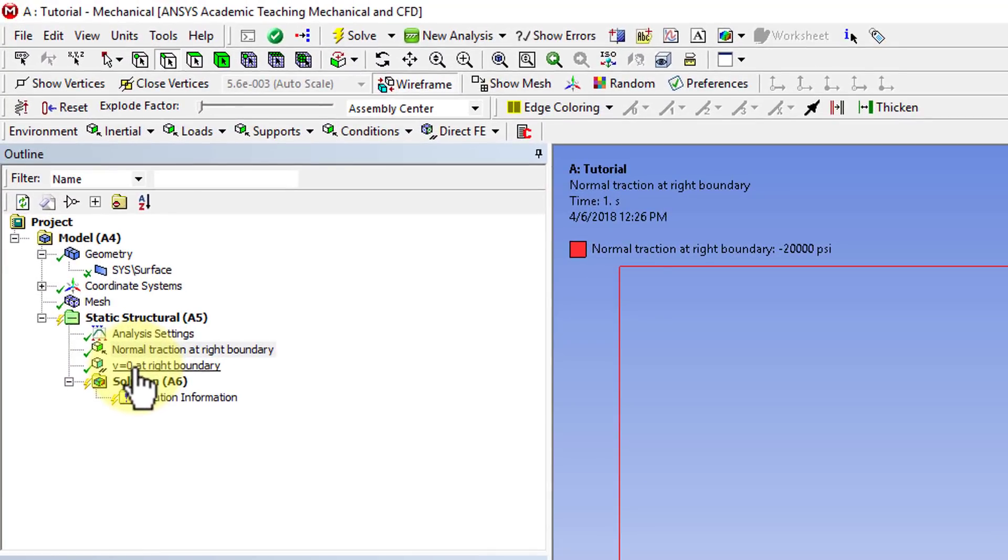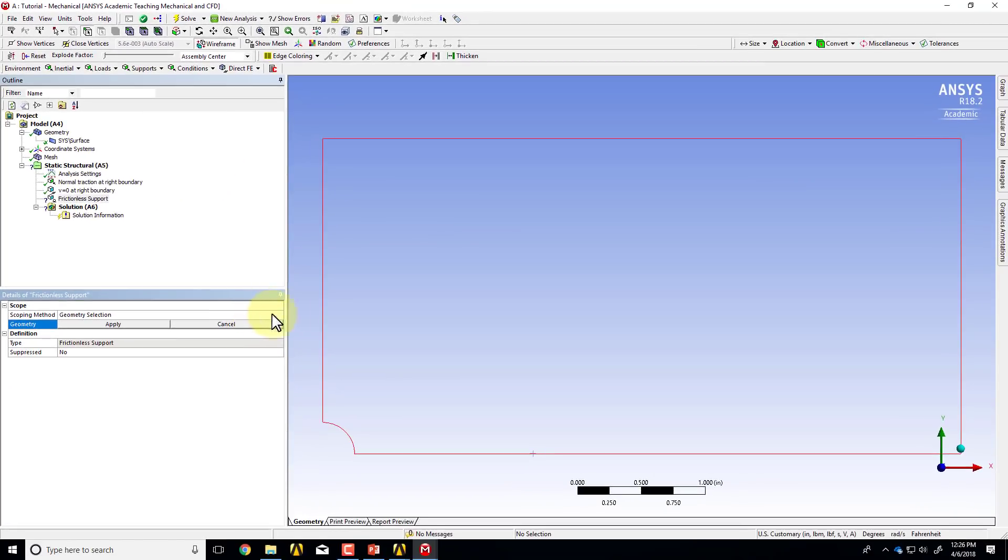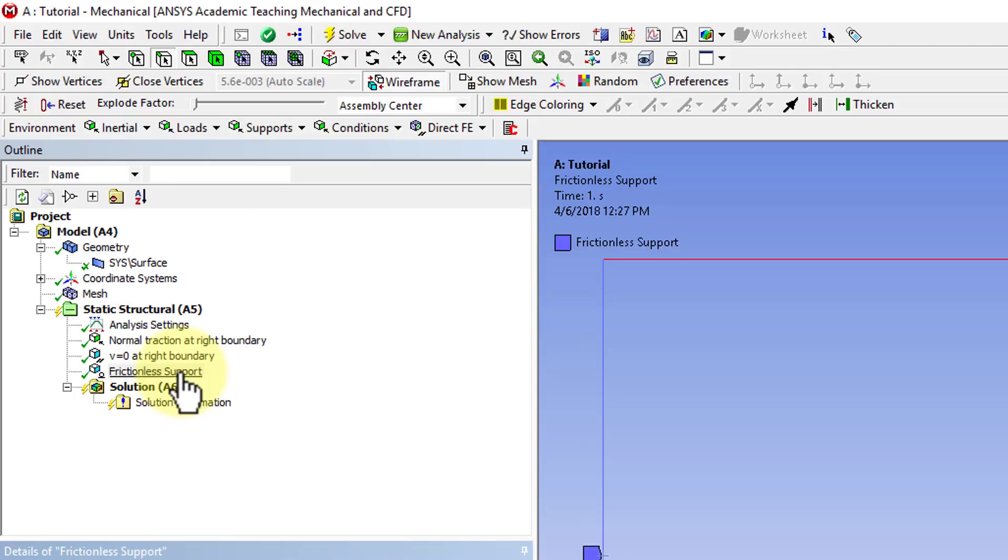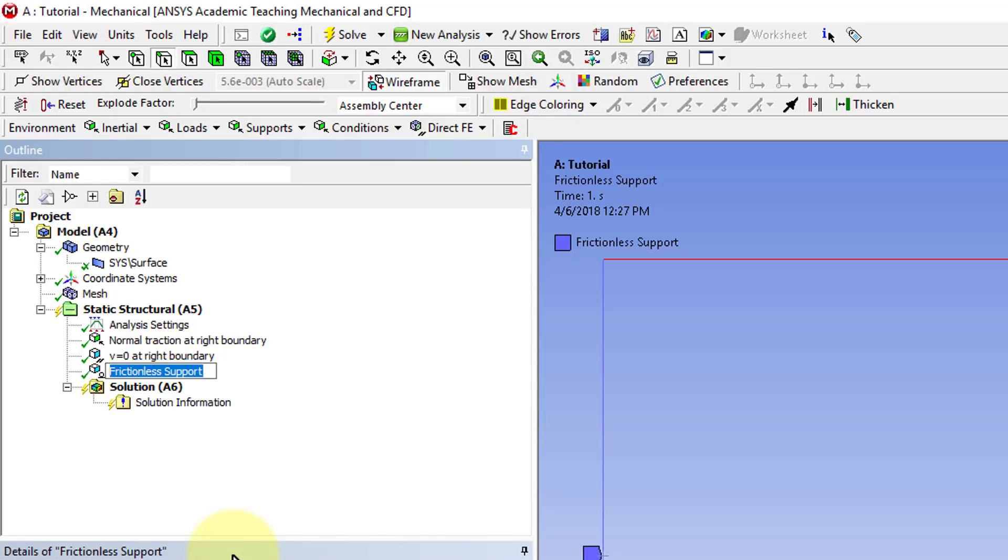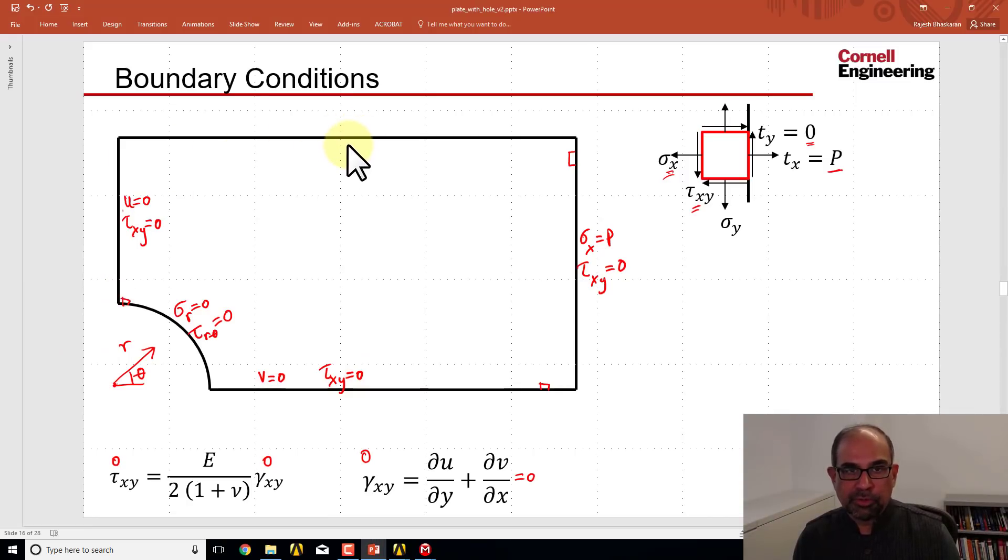And I'll do this a little bit differently than v equal to 0. So what I'll do is I'll say supports frictionless support. And the frictionless support essentially sets the displacements normal to a boundary to be 0. So I can set, in this case, u equal to 0 that way. So let me remind myself that that boundary condition is u equal to 0 at left boundary. And then over here, again, I basically have a free surface. So the boundary condition, the default boundary condition is what I have. That is all there is to set the boundary conditions.